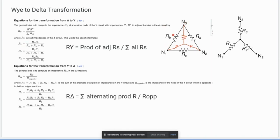If you want this one, that will be the adjacent Ra times Rb divided by the product of all the resistors. And this one, that will be Rb times Rc because of the adjacent divided by the sum of all the resistors.